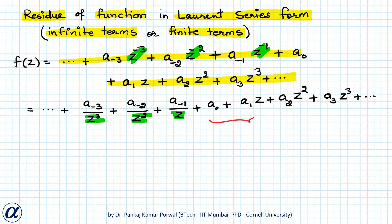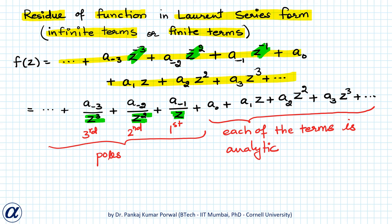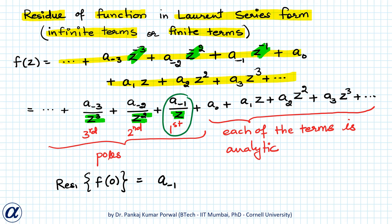In this series, the terms with non-negative powers are each analytic, so the residue contribution of each of those terms will be zero. The negative power terms give us poles of different orders: first order pole, second order pole, third order pole. We can find their residues, and it turns out the residues of all poles except the first order pole term are zero. The residue of function f(z) at z = 0 equals a₋₁, the coefficient of the simple pole term.